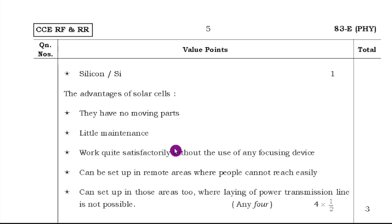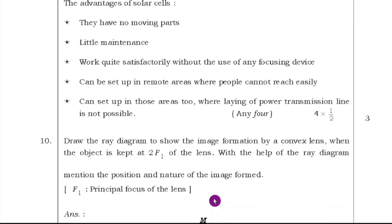For the next question, they asked solar cell is made up of what? It is made up of by silicon. Next one, what are the advantages of solar cell? They have no moving parts, little maintenance, work quite satisfactorily without the use of any focusing devices, can be set up in remote areas where people cannot reach easily. Any four points you write, you will get the marks.